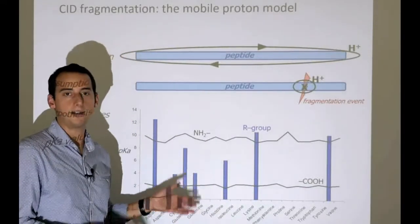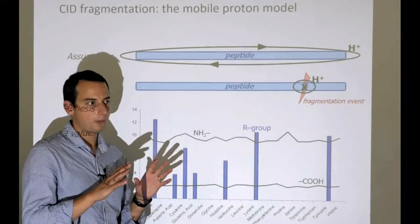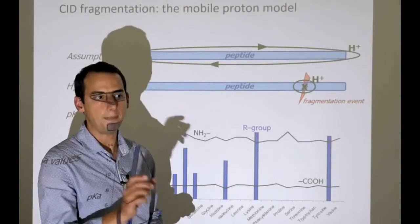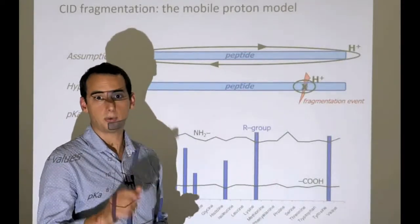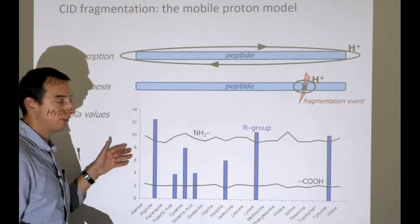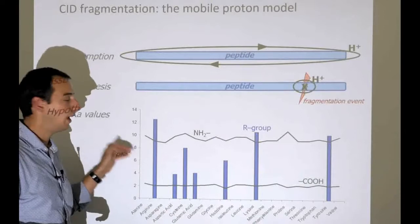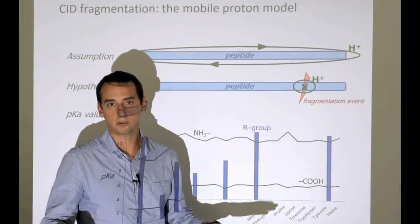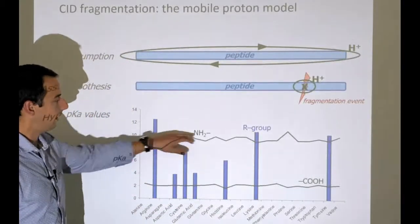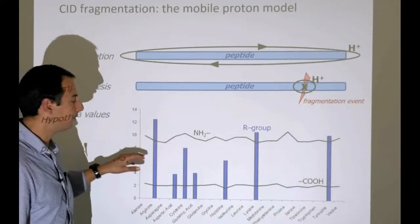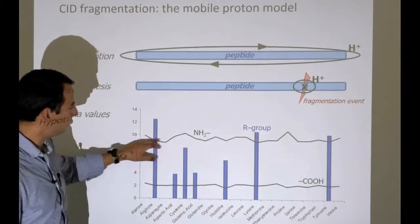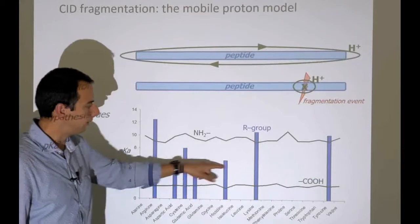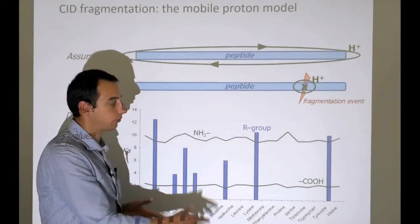How do we figure out where this proton will be? A proton being somewhere has to do with the basicity of that location. If a location is very basic, it's very ready to accept a proton, meaning the proton is energetically stable there. We figure out basicity using the pKB—the minus logarithm of the equilibrium base constant of the amine group—and the pKX, the basicity or acidity of the side chain. I've plotted these numbers in a graph.